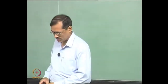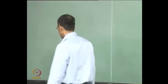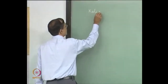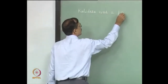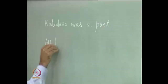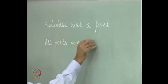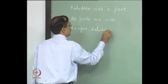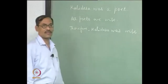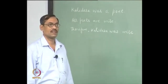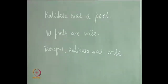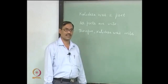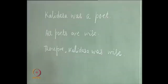Let us consider another argument and see what happens. When we try to symbolize it in propositional logic, the first principle is to find the connectives or connective-looking words, then break it into smaller units. There is no connective in the first sentence, no connective in the second sentence, and no connective in the third sentence.